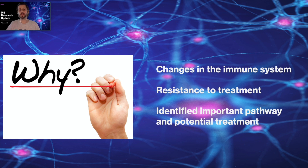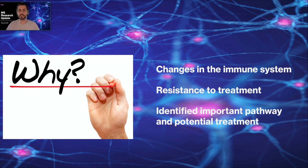More than that, after the mice developed disease, they tried to treat it with interferon beta, a common MS therapy. In the mice that hadn't undergone trauma, they found this therapy was quite effective — it was able to treat the disease and the mice got better. However, in the mice that had experienced early life trauma, they found that they were completely resistant to this treatment with interferon beta.